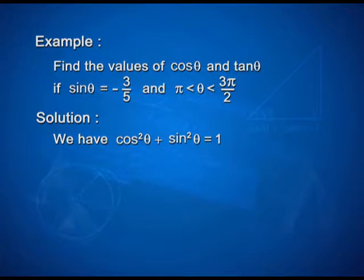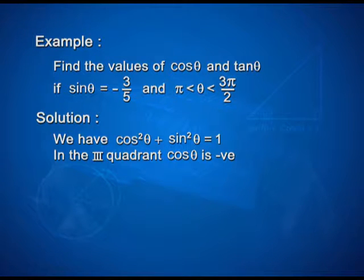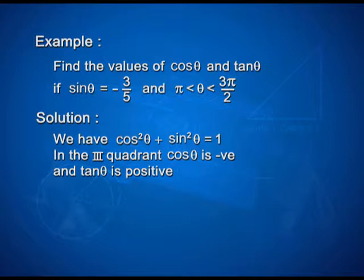Solution: we have cos square theta plus sin square theta is equal to 1. Now, in the third quadrant — theta is lying between pi and 3 pi by 2 — so in the third quadrant, cos theta is negative and tan theta is positive.